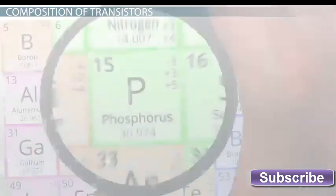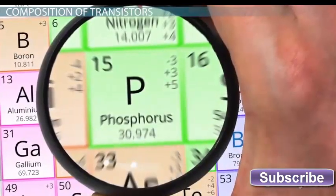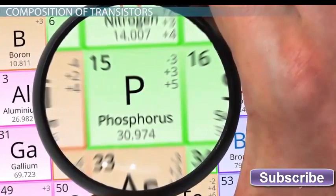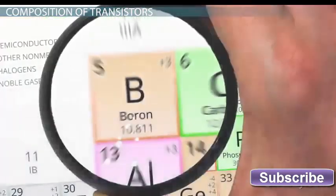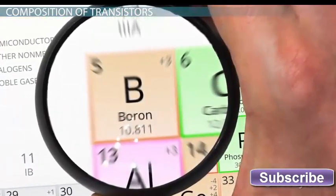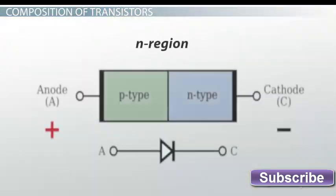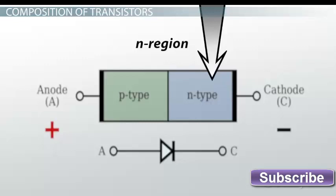N region: negatively charged area of the semiconductor into which electron donor atoms are added so that there is an extra electron that is free to float away per donor atom.